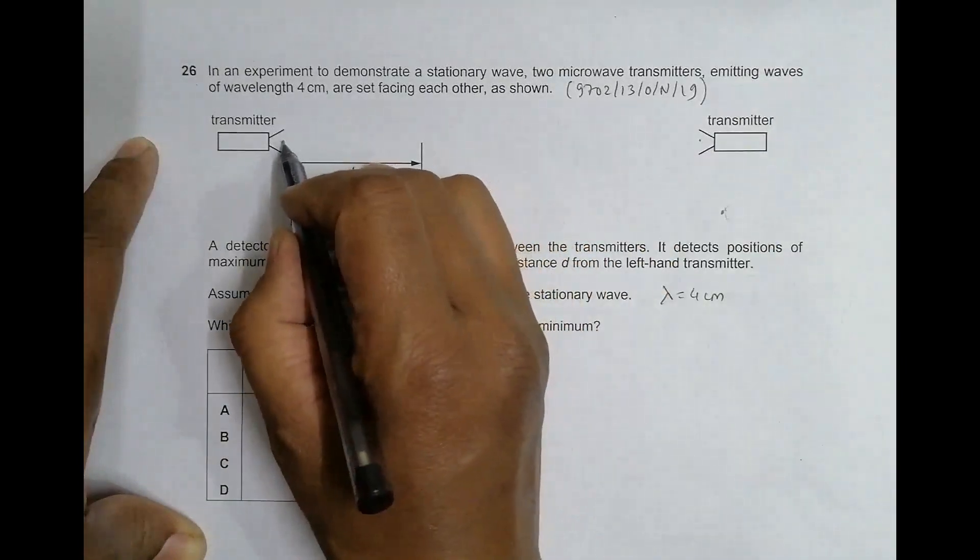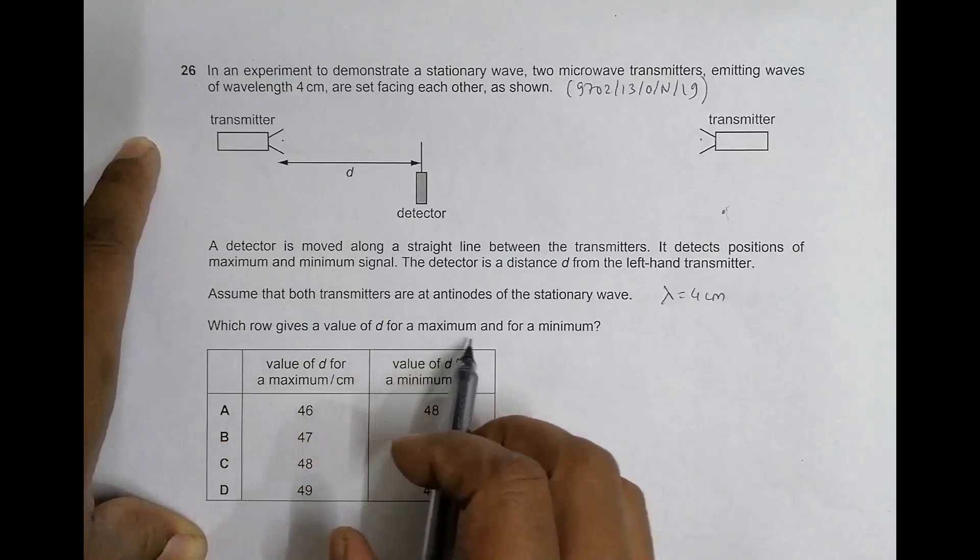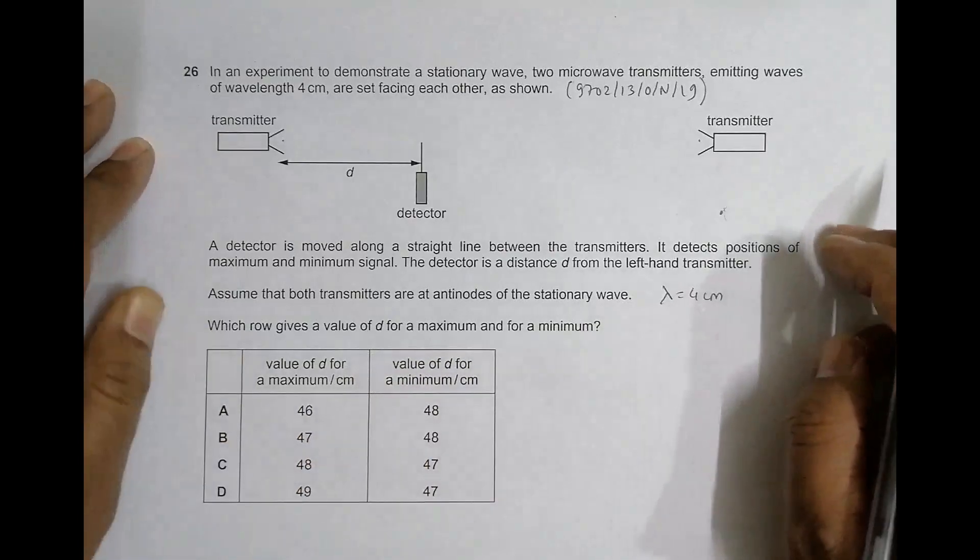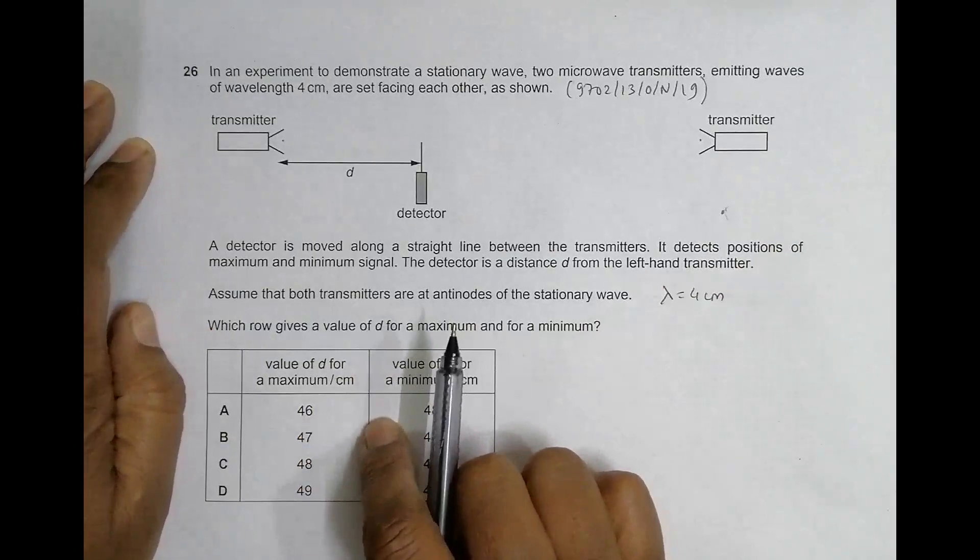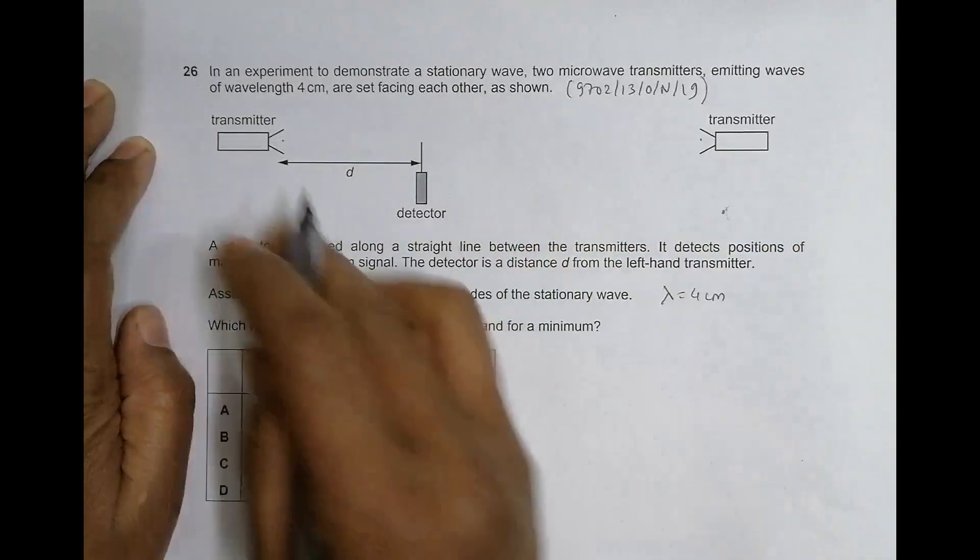Antinodes which will give us a value of D for a maximum and for a minimum. So we have to find which values of D give the values for maximum and minimum. Let us draw the waves here.